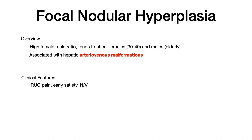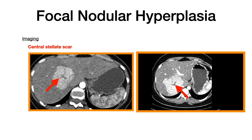Clinical features are exactly the same: a tumor in the liver causes right upper quadrant pain, expanding abdominal mass effect causes early satiety, and nausea and vomiting. For focal nodular hyperplasia, there are two really high-yield things to know: its association with AVMs, and what you see on imaging.